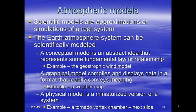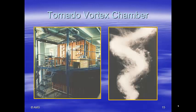We also have graphical models. A good example is a weather map, where we take a bunch of data and plot it in a presentation that's easy to see and gives you an idea of what's happening in the atmosphere. We also have physical models — a miniaturized version of a system. These are not used extremely often in atmospheric physics or meteorology because it's really hard to make a miniaturized version. One example is the tornado vortex chamber, which gives us an idea of how wind can start turning in a circle.